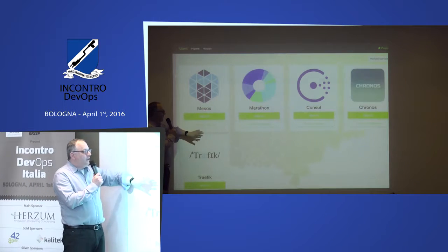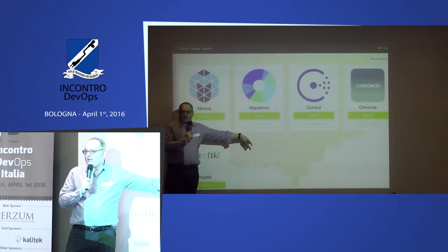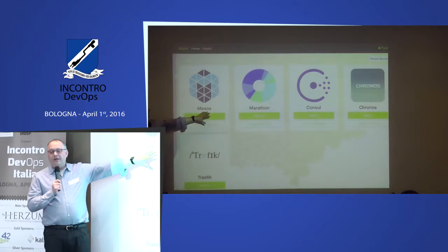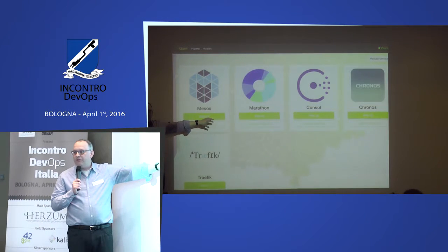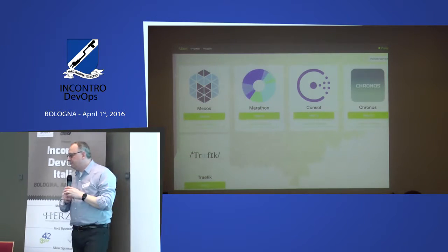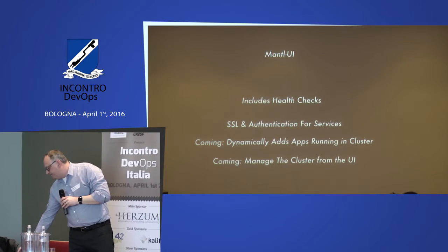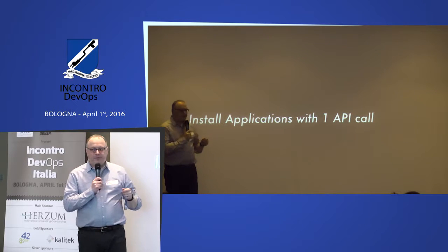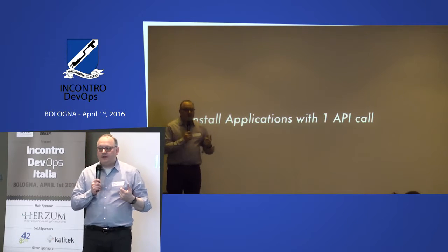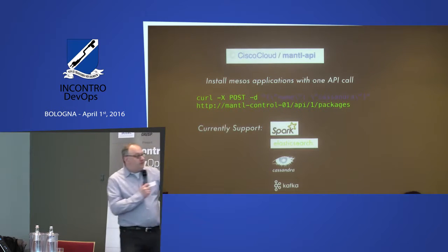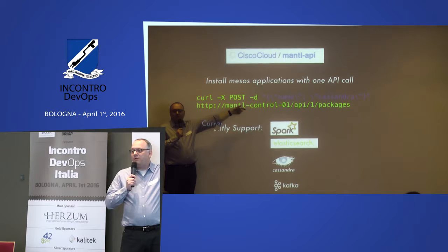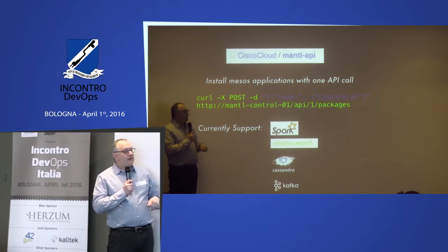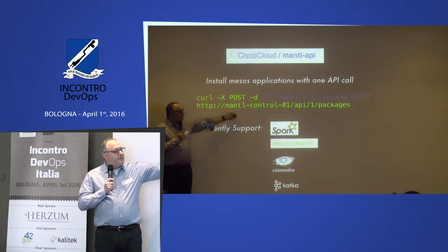The Mantle interface has health checks built right in — as you bring up Elasticsearch or Kafka, they automatically appear and their health status is visible. The UI has authenticated SSL through a single port, so there's proper security unlike many open-source projects. For data applications like Kafka or Elasticsearch, since we use Mesos frameworks, there's a single API call to launch them. To bring up a Cassandra cluster, you just POST to a control node with the name 'Cassandra' and it launches the Mesos framework. Same for Elasticsearch and Kafka — one command once the cluster is up.